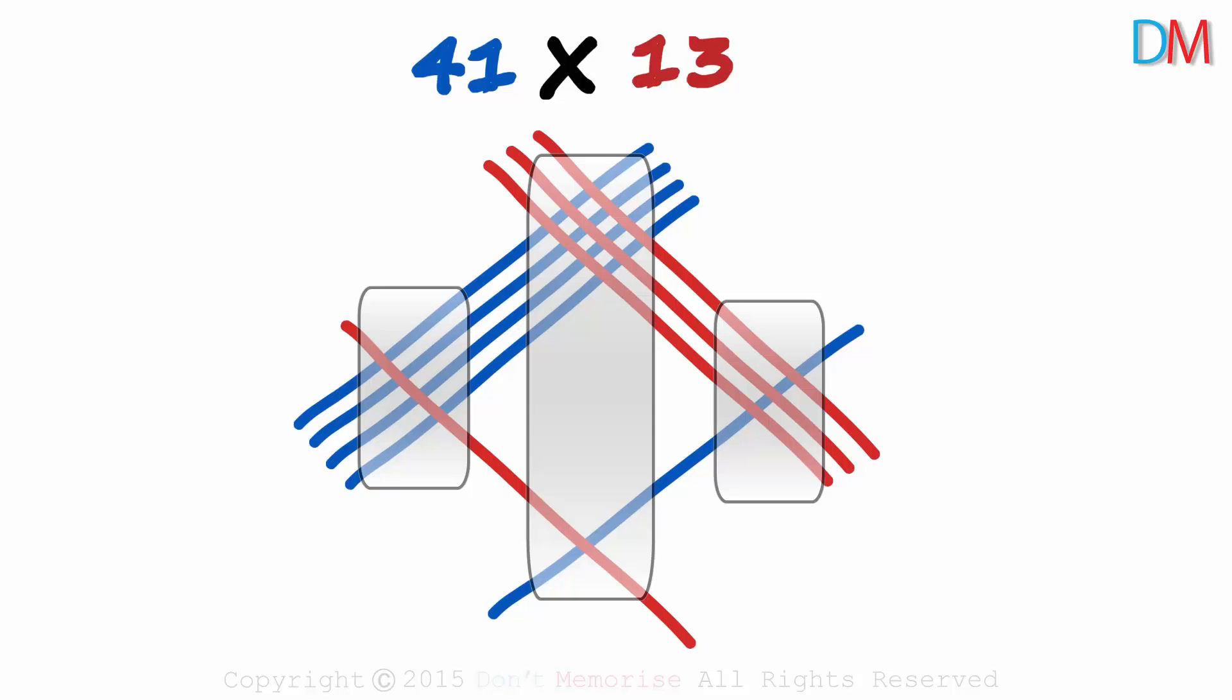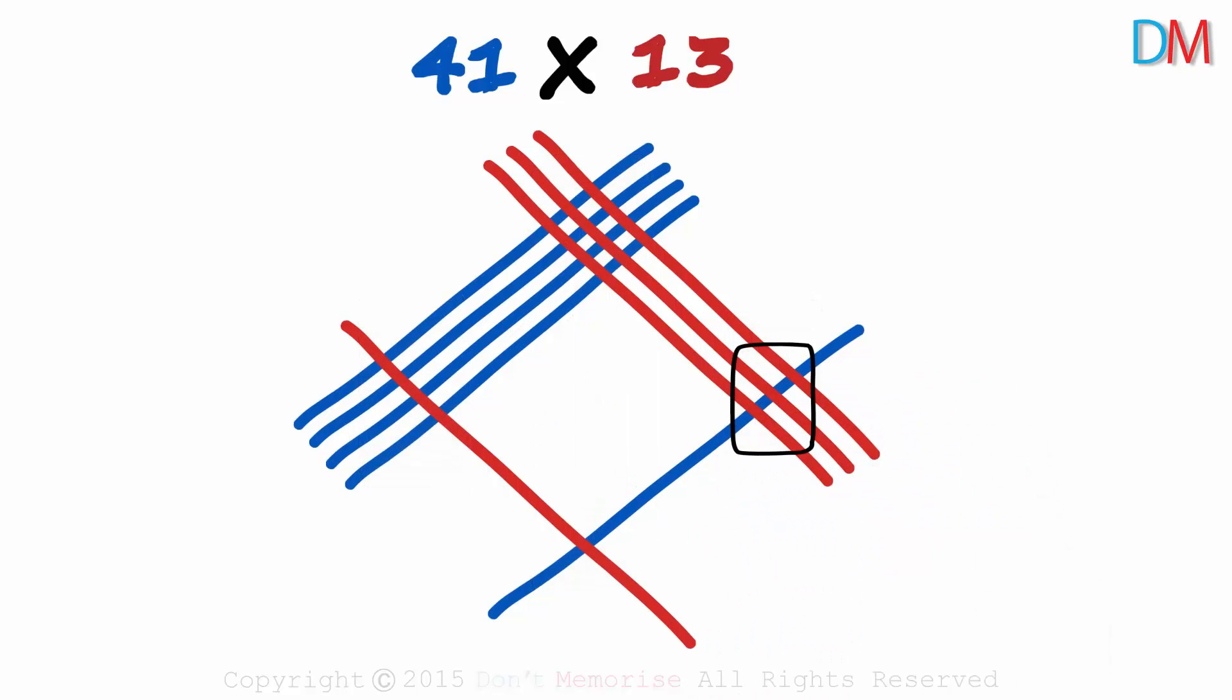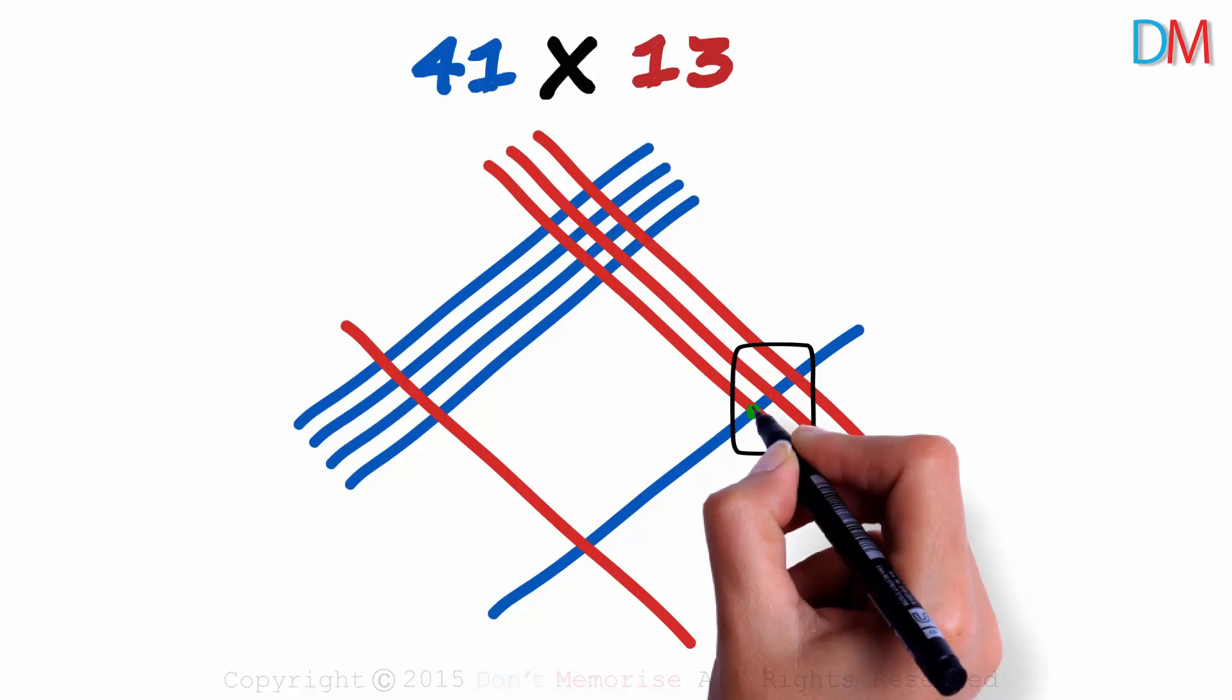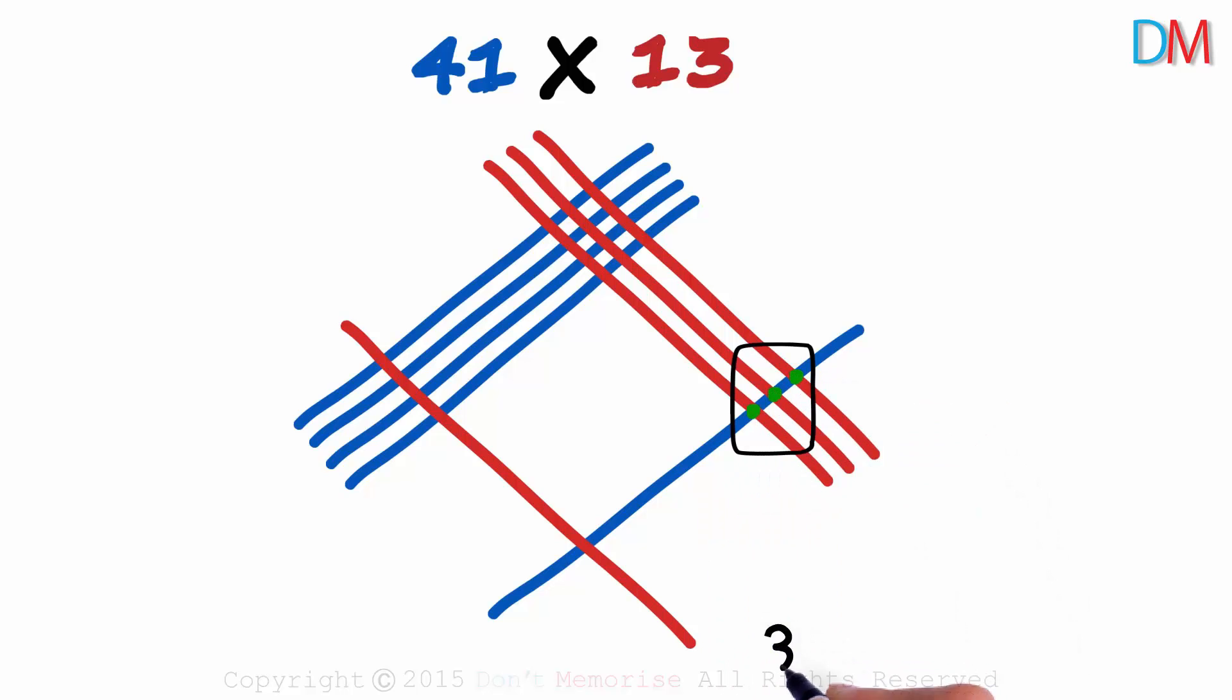And the three vertical zones are ready. We start with the zone at the extreme right and count the number of intersections. 1, 2 and 3. Three intersections.